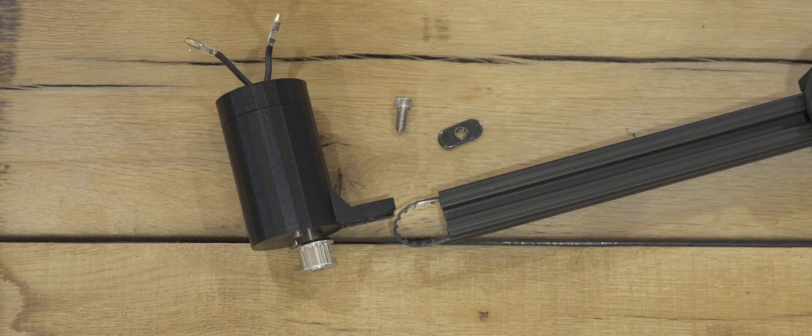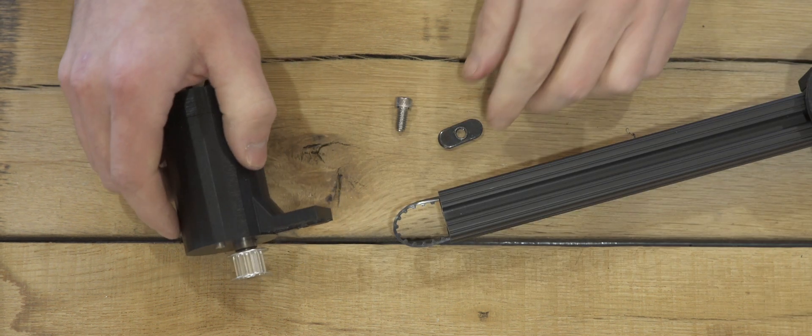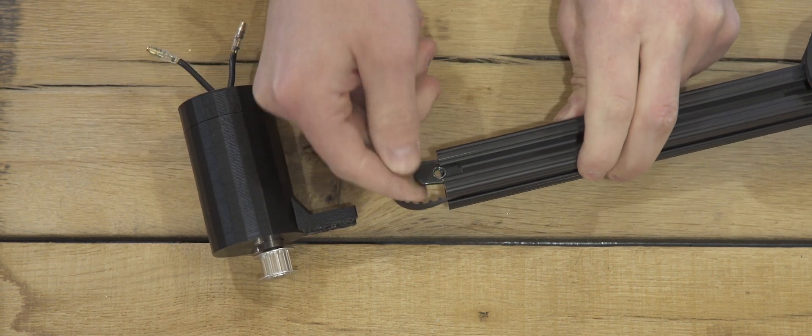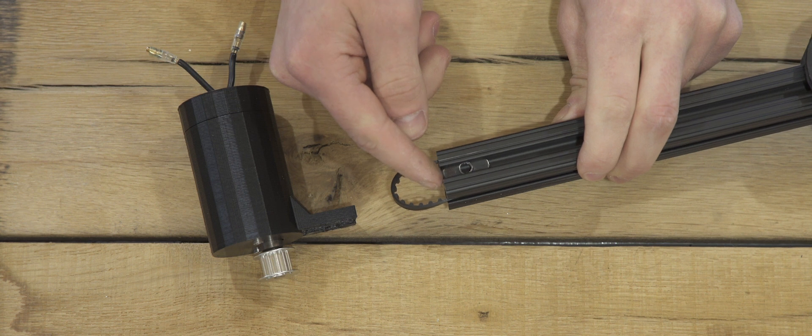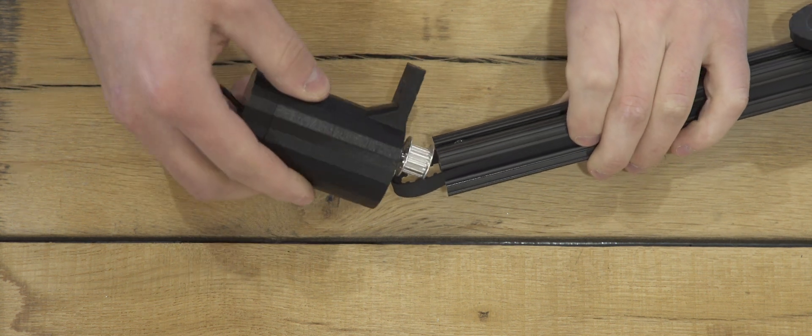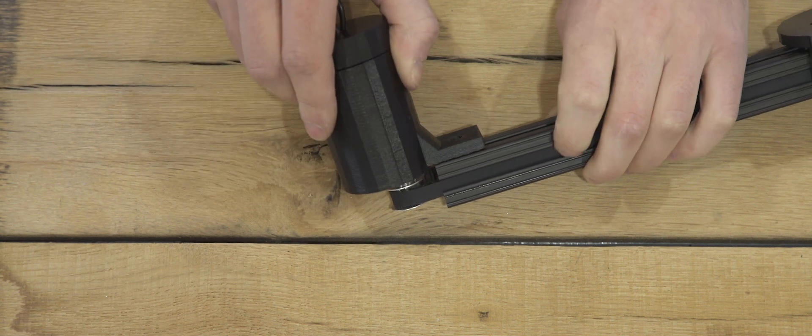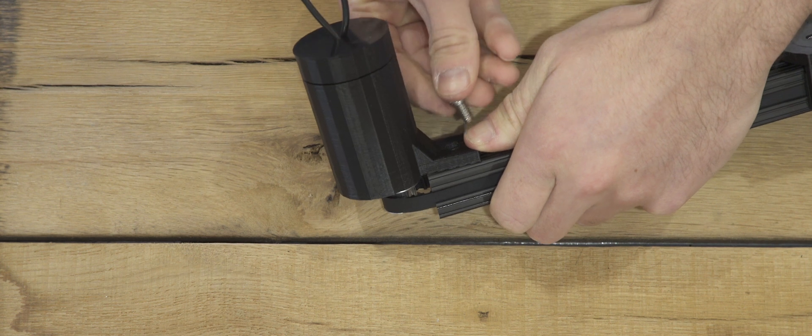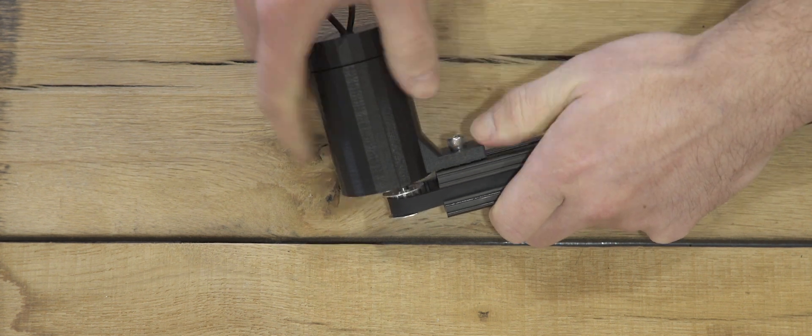With the motor mount complete, we can attach it to our slider using a quarter 20 by half inch screw. This method of attachment creates a very simple way for adjusting tension on the belt, simply by moving the motor in or out along the rail. Good tension is very important for vertical shots in order to avoid having the belt teeth skip on the pulleys.